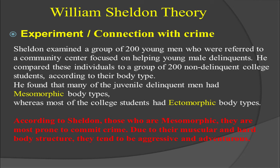He found that many of the juvenile delinquents had a mesomorphic body type, whereas most of the college students had an ectomorphic body type. Both groups were young and in the same age range, but the delinquents had a mesomorphic body structure — they were strong, energetic, thick-skinned, and muscular — while the non-delinquent college students were ectomorphic, meaning they were weak, thin, and fragile.